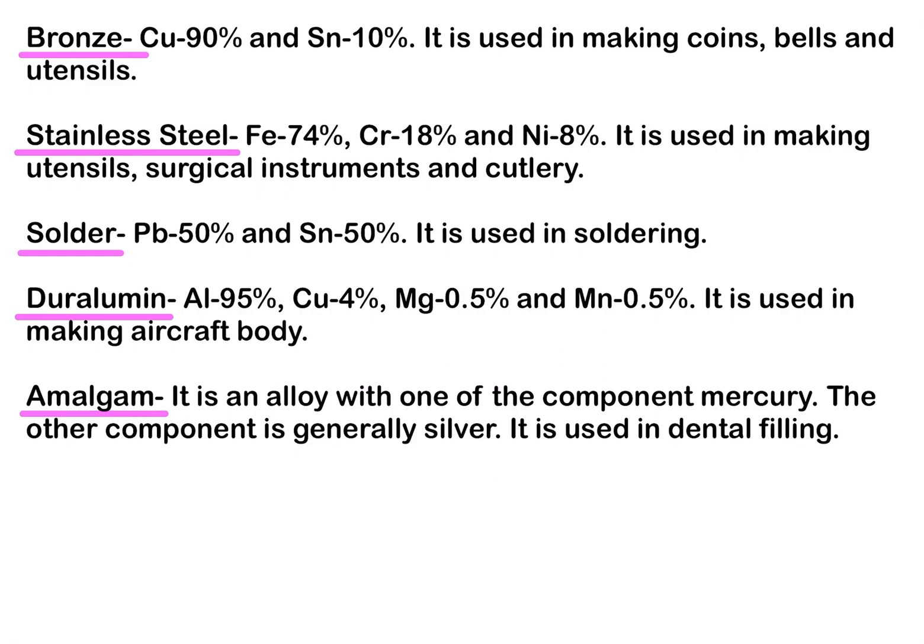Duralumin is an aluminum-based alloy consisting of 95% aluminum, 4% copper, 0.5% magnesium and 0.5% manganese. It is used in making aircraft bodies. Aluminum is a low density metal that is not very strong on its own, but when mixed with copper, magnesium and manganese, it combines strength and lightness together, making it ideal for aircraft building.